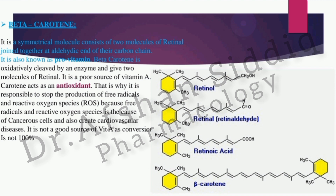Beta-carotene is a pro-vitamin, a preliminary form of vitamin A — it is not the active form. Looking at the chemical structures: retinol contains a benzene ring with a side chain bearing a hydroxyl group; retinal has an aldehydic group in the side chain; and retinoic acid contains a carboxylic group. Beta-carotene is a symmetrical structure consisting of two molecules of retinol joined together by an aldehydic linkage.